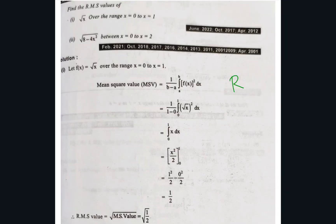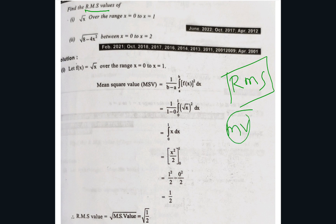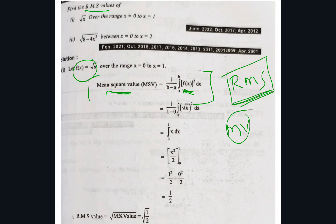Moving on to the next topic: root mean square (RMS) value. In this question we calculate RMS value. The formula for mean square value is the same as mean value but with f(x) squared: 1/(b−a) times the integral from a to b of [f(x)]² dx. The given function is f(x) = √x. In place of [f(x)]², substitute (√x)² — the square root and square cancel, leaving just x.